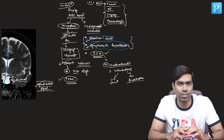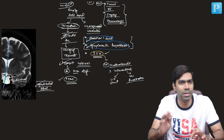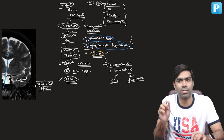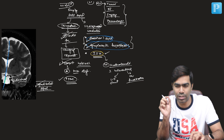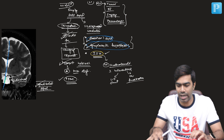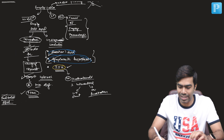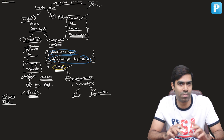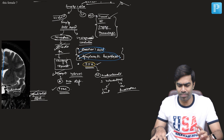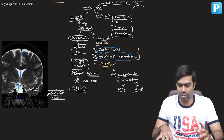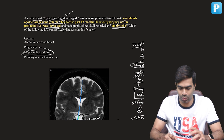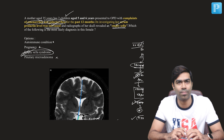If it is a partial empty sella, be careful in looking for a mass — if you see a mass in the small amount of pituitary visible in the sella, that points toward secondary rather than primary empty sella. These are the practical aspects regarding empty sella, and that completes our question. The answer is empty sella syndrome.